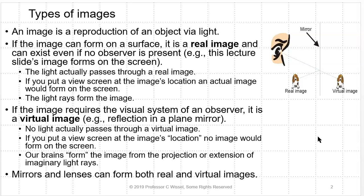If the image requires a visual system and an observer, it is a virtual image. For instance, reflection in a plane mirror is a virtual image. No light actually passes through a virtual image. If you put a view screen at the image's location, no image will form on the screen, because our brains are needed to form the image from the projection or extension of the imaginary light rays. Virtual images are usually right-side up. Mirrors or lenses can form both real and virtual images, depending on the location of their focal point and the object.